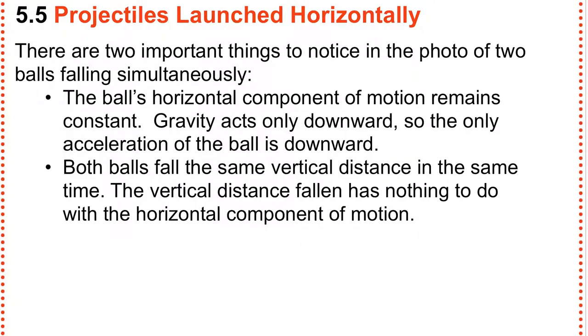So you've got two things going on at the same time. You've got the horizontal component and the vertical component that are independent of each other. And because they're independent, you're going to end up with a parabolic curve.